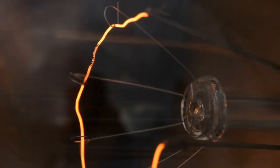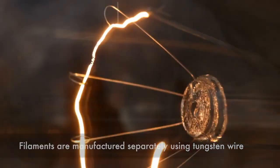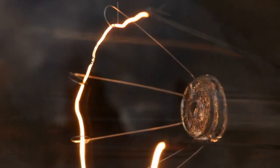Meanwhile, the filaments are manufactured separately using tungsten wire. This wire is wound into coils and then stretched to the desired thickness and length. The filaments are then mounted onto support structures and placed inside the glass bulbs.